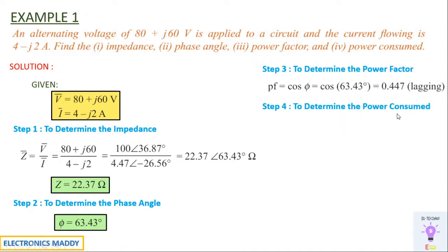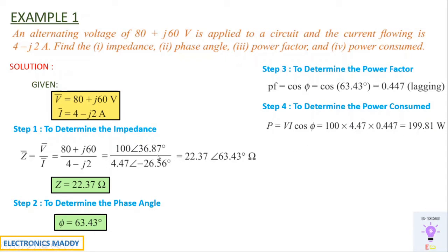Next, determine the power consumed. If they say power consumed, it is always active power — due to the resistive elements. The formula is P = VI cos φ. Here, V = 100 and I = 4.47 (magnitudes in polar form), so P = 100 × 4.47 × cos 63.43° = 199.81 Watt. This summarizes our first problem.